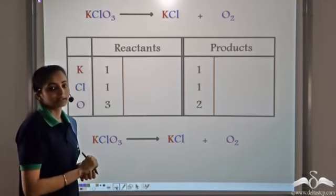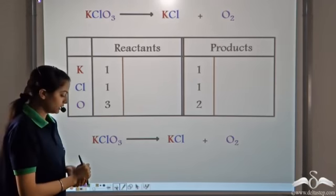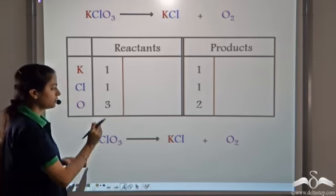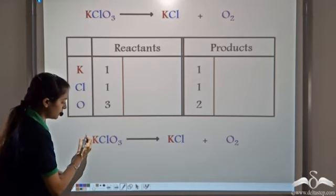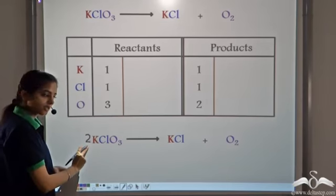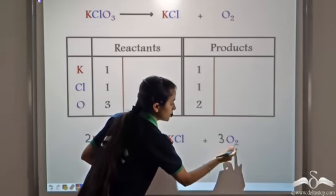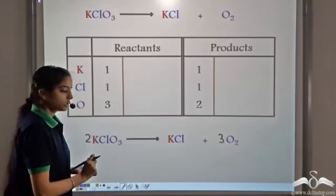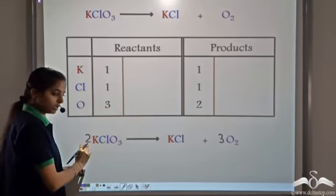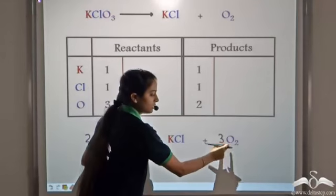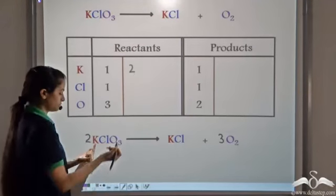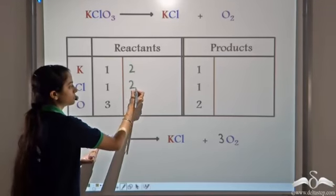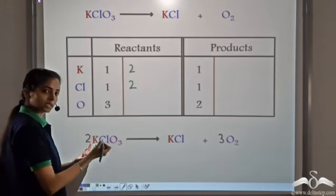How to make this balanced? We can balance only if we make this a multiple of 2. If we multiply the reactant side by 2, we get 6 atoms of Oxygen, and if we multiply the product side by 3, we get 6 atoms of Oxygen. So by multiplying this side by 2 and this side by 3, we can balance Oxygen on both sides. This gives us 2 atoms of Potassium, 2 atoms of Chlorine, and 6 atoms of Oxygen on the reactant side.